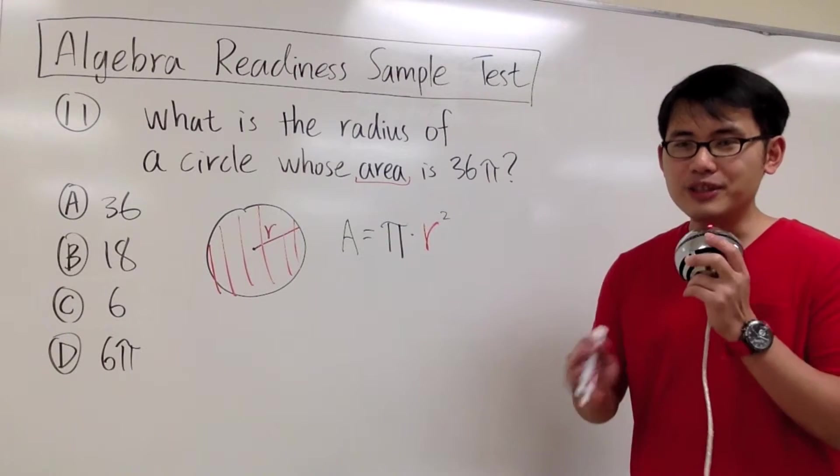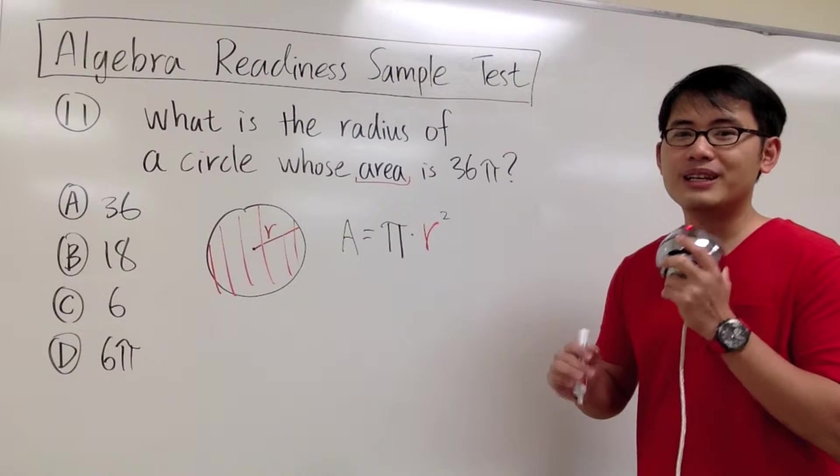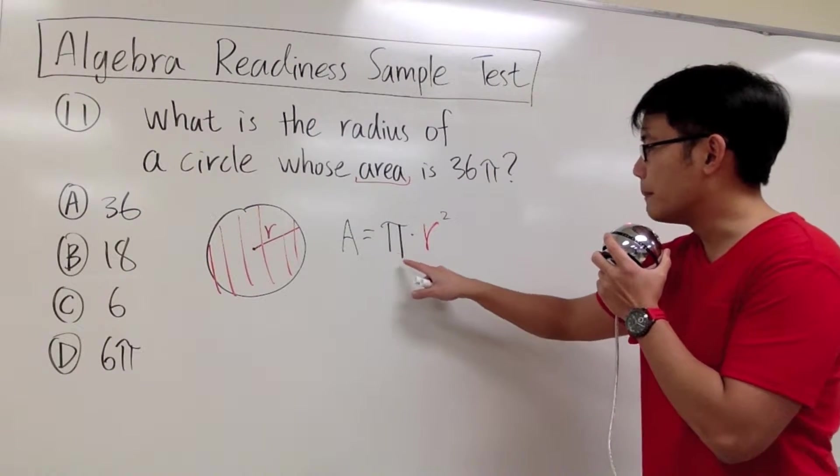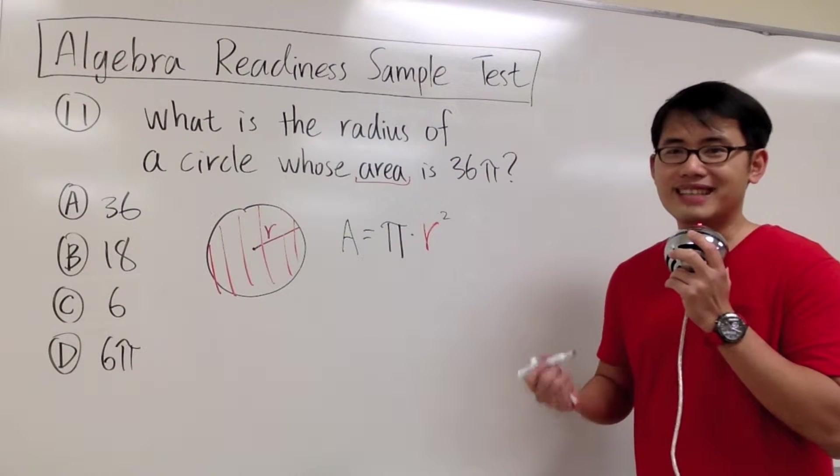And you should check out my next video, just in case the question is asking us for the circumference of the circle, there's another formula for that. But we'll finish this up, we'll use A = πr². And this is how I wanted to show you guys how to do this.